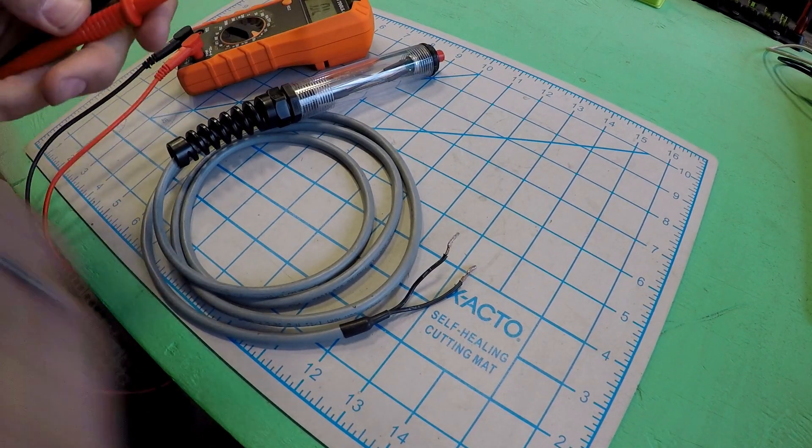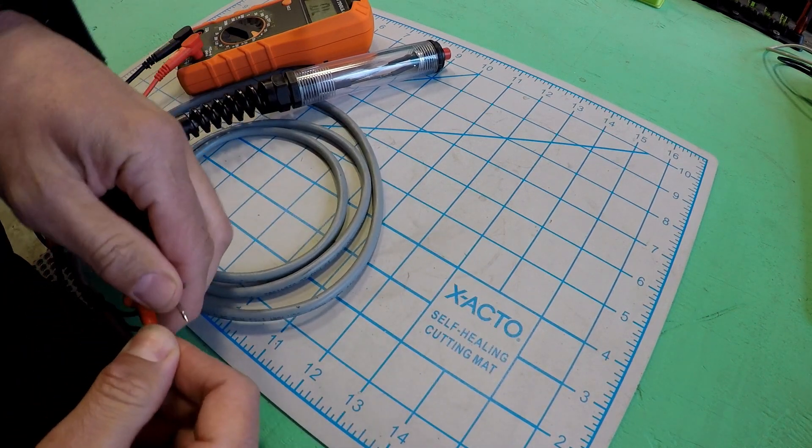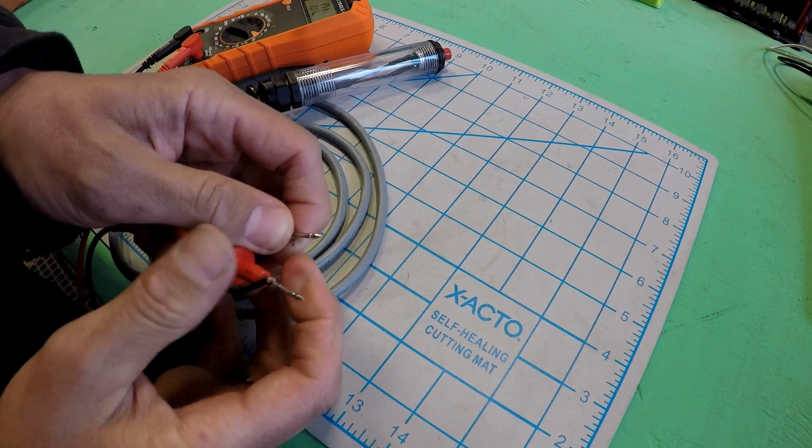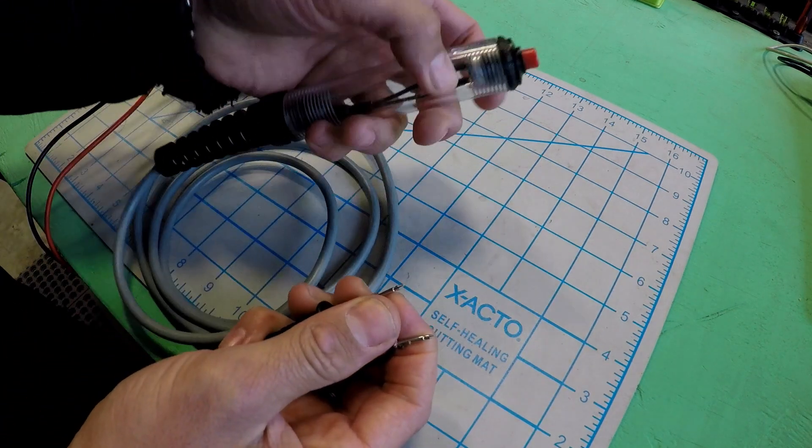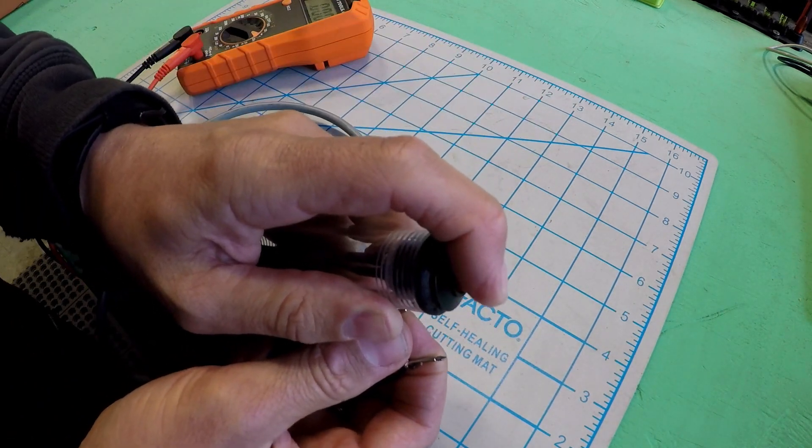First thing we check is continuity. Most multimeters will have a function on the dial that allows you to do this pretty simply. You just connect your two wire leads to the test leads coming off the multimeter. Make sure those all stay in place, press and hold the button, and you hear your audible tone telling you that your circuit is complete.